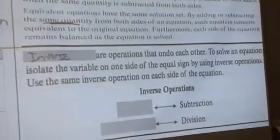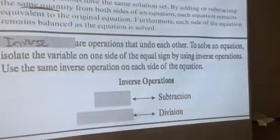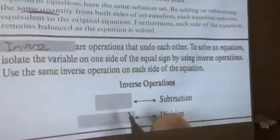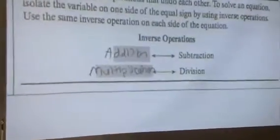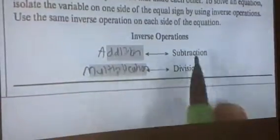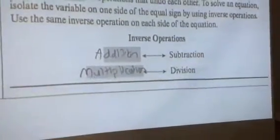Inverse operations are operations that undo each other. To solve an equation, we use inverse or opposite operations to isolate the variable on one side. The opposite of subtraction is addition — those two undo each other. The opposite of division is multiplication. So if we're solving an equation that has addition, we use subtraction. If it has multiplication, we use division.